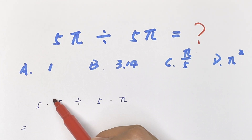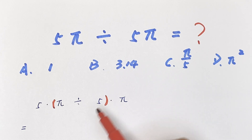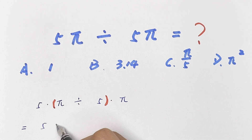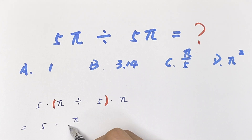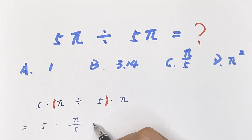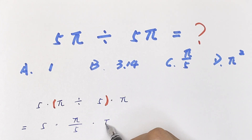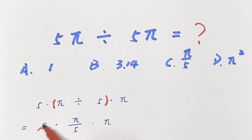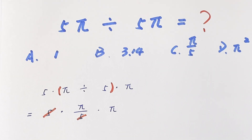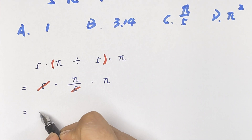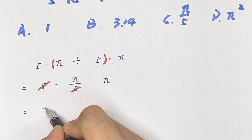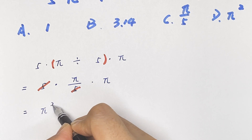We take this into the bracket, say to be 5 times pi over 5 times pi. Now this will cancel with this, so it is equal to pi squared.